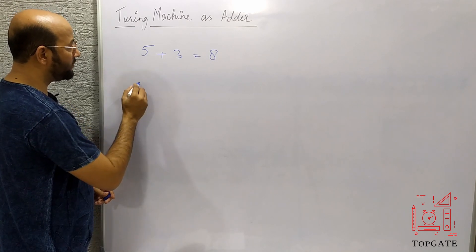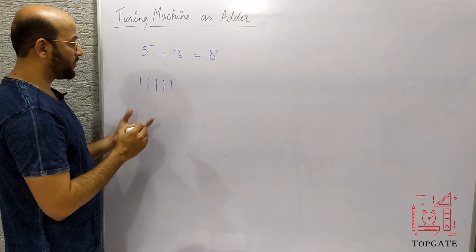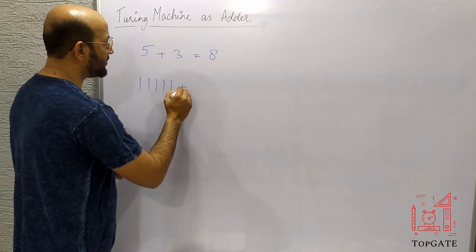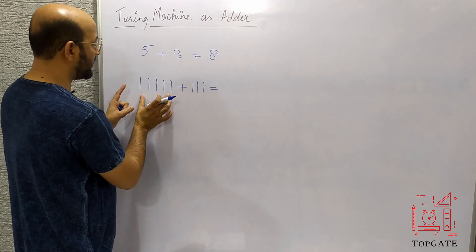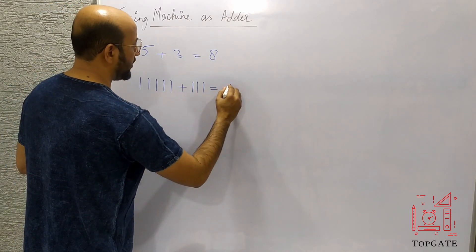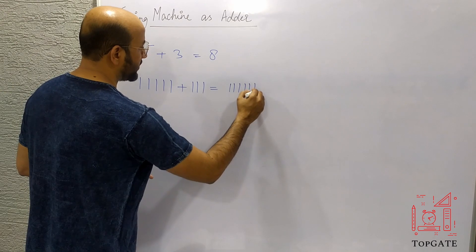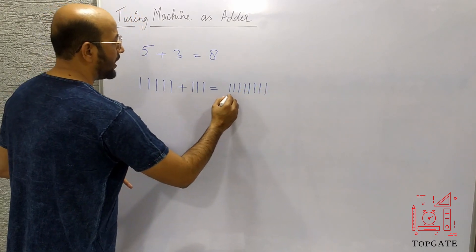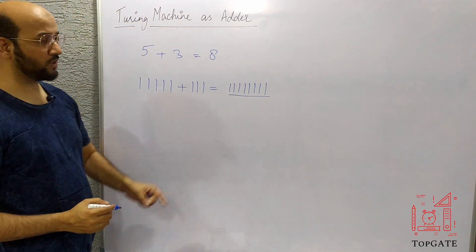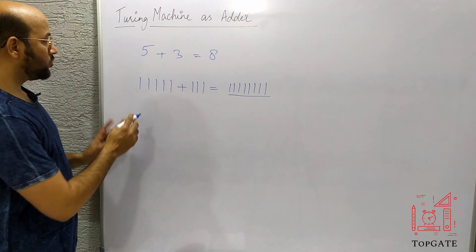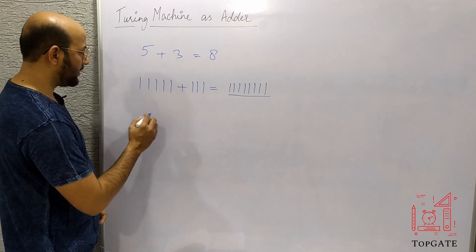Five in unary is five ones: 1 1 1 1 1. Then three in unary is three ones: 1 1 1. In total, five plus three gives eight ones. So on the input tape, we should get eight ones as the sum.